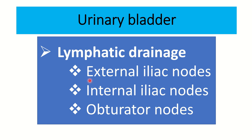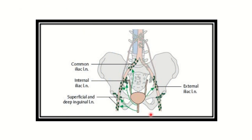The lymphatic drainage of the urinary bladder drains into the external iliac lymph nodes, internal iliac lymph nodes, and obturator nodes. The external iliac lymph nodes are located along the external iliac vessels, the internal iliac lymph nodes along the internal iliac vessels, and the obturator lymph nodes along the obturator vessels.